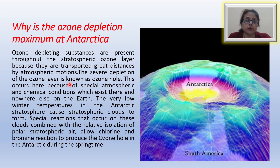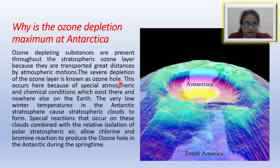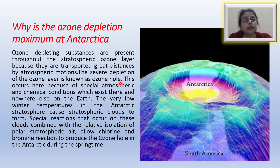The severe depletion of the ozone layer is known as the ozone hole. However, ozone hole does not mean there has been a literal hole above the Antarctic — it is not a hole, it is the thinning of the ozone layer. Scientists have named it the ozone hole, but it is actually the thinning of the layer of ozone, which occurs because of special atmospheric and chemical conditions which exist there and nowhere else on earth.